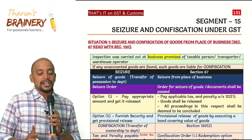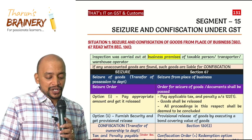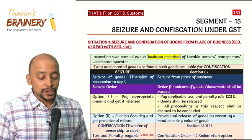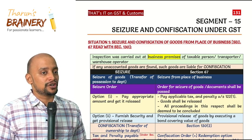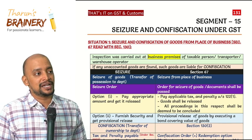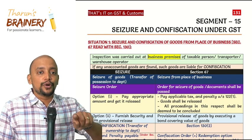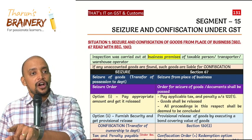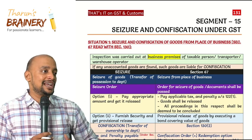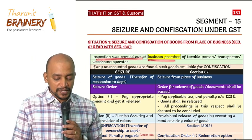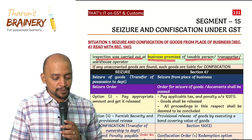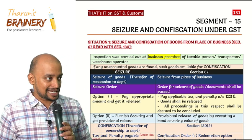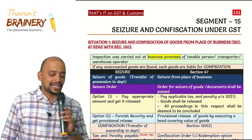There are two situations where seizure and confiscation will apply. Situation number one: the proper officer, as per section 67, inspects the business premises to identify whether there are any goods liable for confiscation — specifically, goods not reported in the stock records. Every product in their premises should be reported in the stock records; if not, those goods are liable for confiscation. So inspection was carried out at the business premises of the taxable person, transporter, or warehouse keeper. If any unaccounted goods are found, such goods are liable for confiscation under section 67.